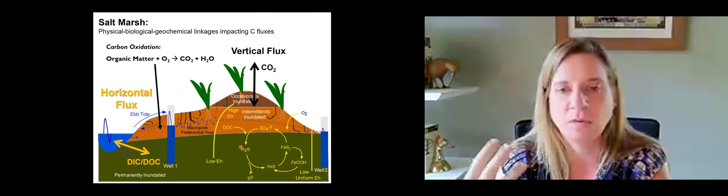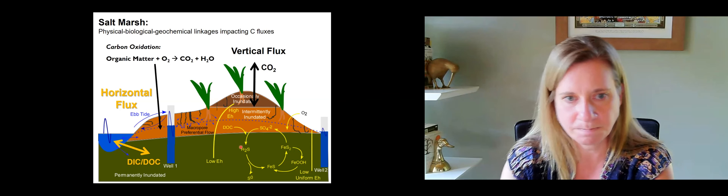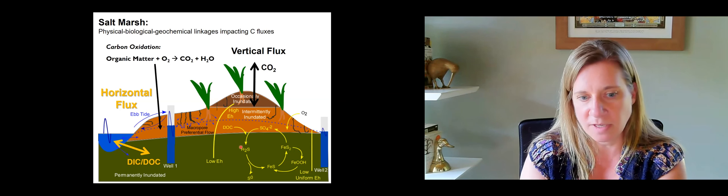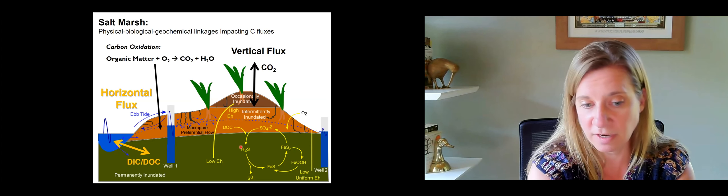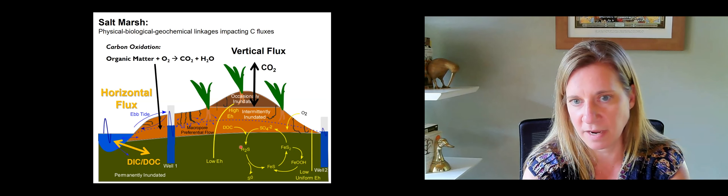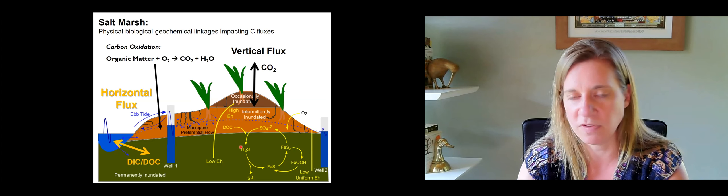One of the important biogeochemical processes at play here is carbon oxidation — I'm showing aerobic carbon oxidation here. Organic matter that's abundant in these marsh sediments, in the presence of oxygen, will be converted to CO2. That's one of the major processes that's going to determine both the concentration of DIC in the water that's exchanging, as well as the amount of carbon dioxide that can move into the atmosphere.